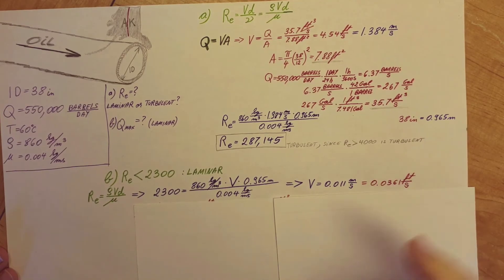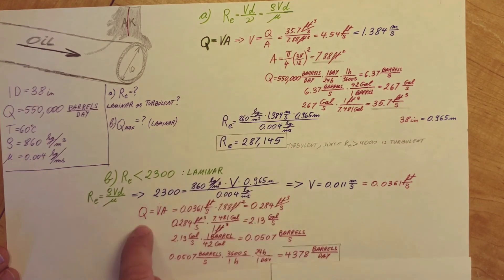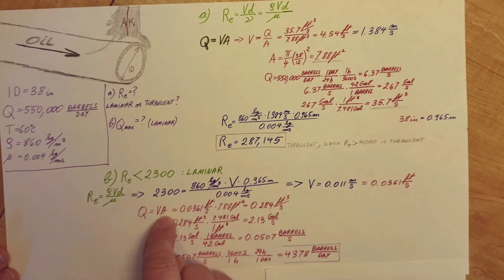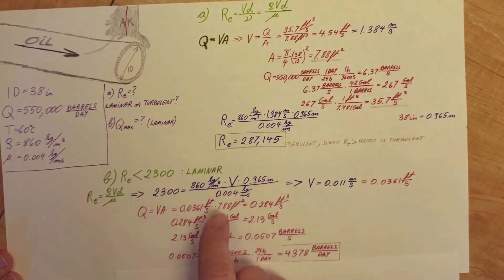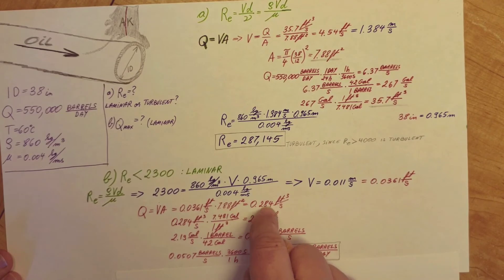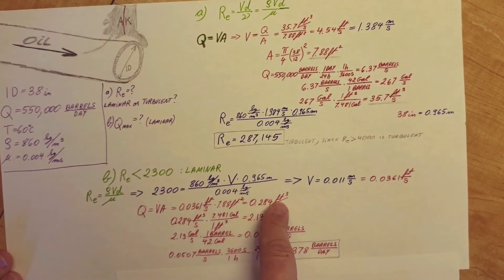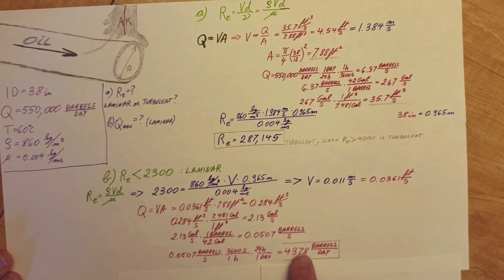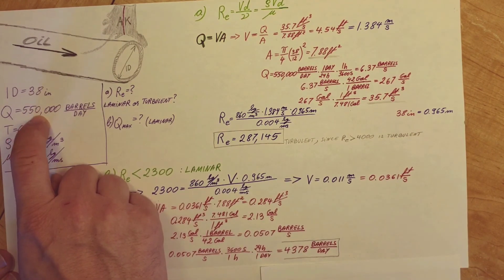Convert it to English units. From there, we're going to go back to the formula we used here. Volume flow rate equals V times A. Same thing, Q. We're looking for Q right now. V times A. V is what we found right here. Our area we calculated up here, so it's the same one. We get 0.284 cubic feet per second. But they want it in barrels per day, like the same way we started. We're going to do conversions from cubic feet per second to gallons per second to barrels per second and to barrels per day. We end up with a number of 4,378 barrels per day. We can see that in order to keep it laminar, this is significantly less than what we had here, 550,000 barrels per day.